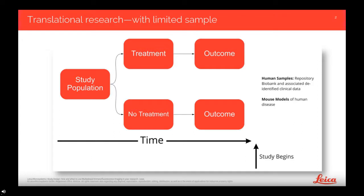Translational research is critical to understanding how scientific observations relate to human health. In translational research, animal models are commonly used following a thorough justification for their use, including replacement, refinement, and reduction of animal experimentation. Recently, the availability of high-quality clinically relevant human tissue has increased. These biobanked samples are linked to de-identified clinical information, as clinical trial participants often consent to research access to their tissue samples outside of the clinical trial. While access has improved, dividing the tissue among multiple researchers often limits the scope of the research that can be conducted.